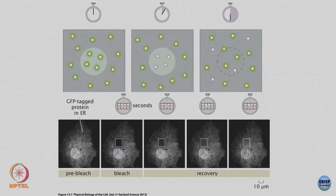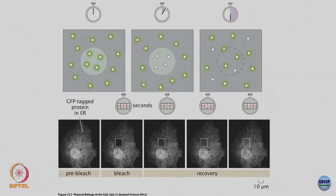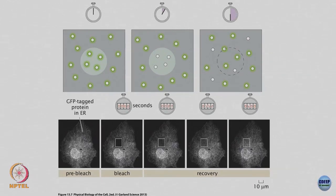Then you wait. Fluorescent molecules outside this bleached region will tend to diffuse back inside. If you wait long enough you will see uniform fluorescence everywhere again. This is the recovery period - you see how fast it recovers fluorescence simply because other molecules outside the bleached region are coming back in. This is prebleach where you have some fluorescent intensity; you bleach a particular region and that becomes dark; then as you wait, fluorescent molecules come in from the rest of the cell into this region until you get a uniform fluorescent intensity again.